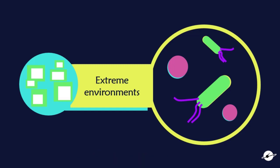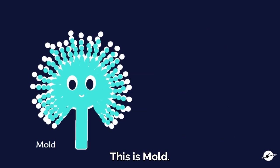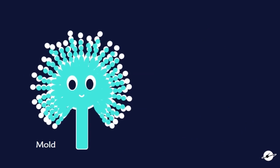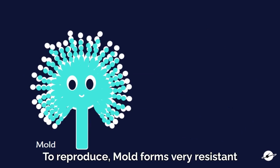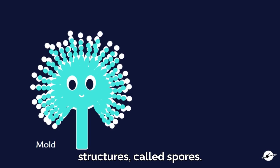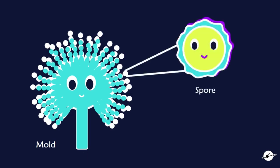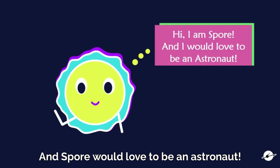Let's give an example. This is mold. Mold as in what we can find in our bathrooms or in our bread. To reproduce, mold forms very resistant structures called spores. And spore would love to be an astronaut.